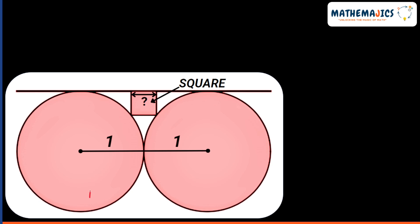In this question we are given two circles, circle one and circle two, and both of them have radius one — that means these two circles are equal to each other. They are meeting at a point, and we are also given a square which is touching these two circles. This square is lying on the common tangent, which is a common tangent to these two circles.